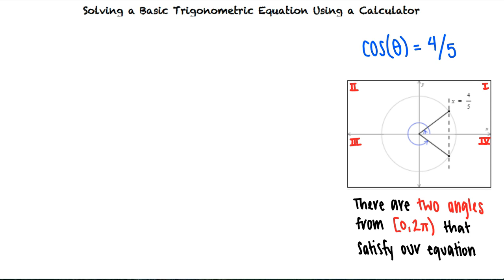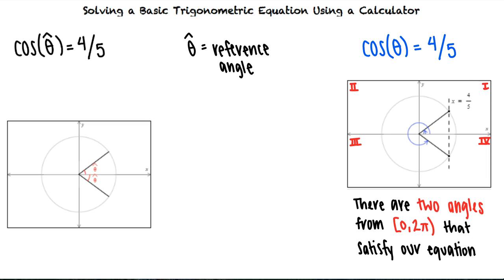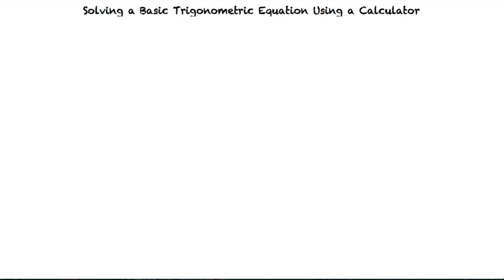The reference angle for these two angles satisfies cosine of the reference angle equals 4 fifths. So the reference angle equals cosine inverse of 4 fifths. Can we review how to work with reference angles? Of course! The reference angle is the acute angle formed by the terminal side of theta in the x-axis.